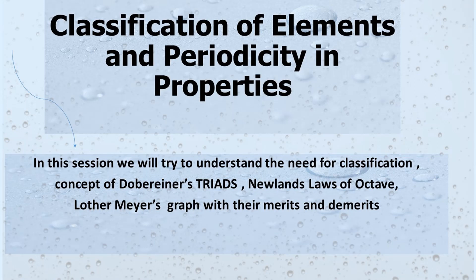Hello students, this is Manoj. Let us begin with our first session from the topic classification of elements and periodicity in the properties. In this session, we will try to understand the need for classification. We will also look into some of the earlier attempts in the classification of elements like Dobereiner's Triad, Newland's Law of Octave, and Lothar Meyer's Graphical Classification. We will also look into their merits as well as demerits.